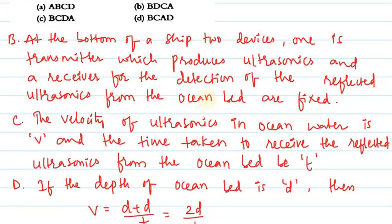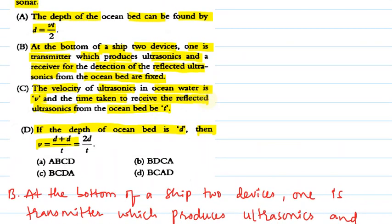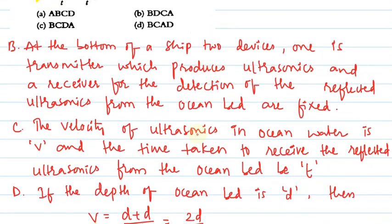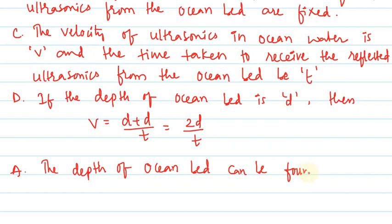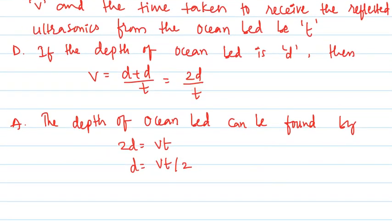Next statement is A. Statement A: the depth of ocean bed can be found by — 2D equals VT, therefore D equals VT upon 2. So we can conclude therefore the correct sequential order.